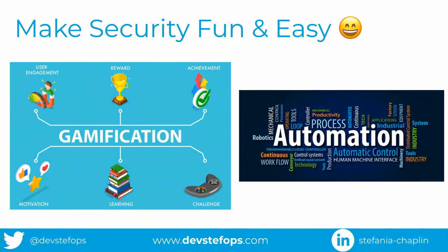The second pillar is automation. You want to have things automated, easy, and make the best path the easiest path — because then people will follow it. If the right path is a difficult path, certain people will take the easy path. So have things automated, reliable, and accessible, within existing developer workflows.